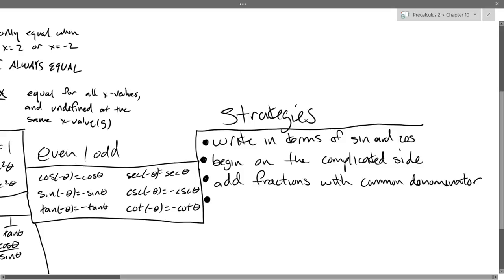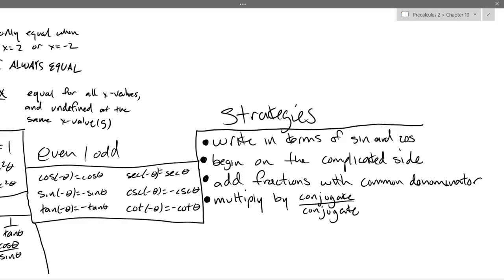You can multiply — and this one is less obvious — by conjugate over conjugate. And I feel like there's a fifth strategy: factor. My favorite f-word, of course.